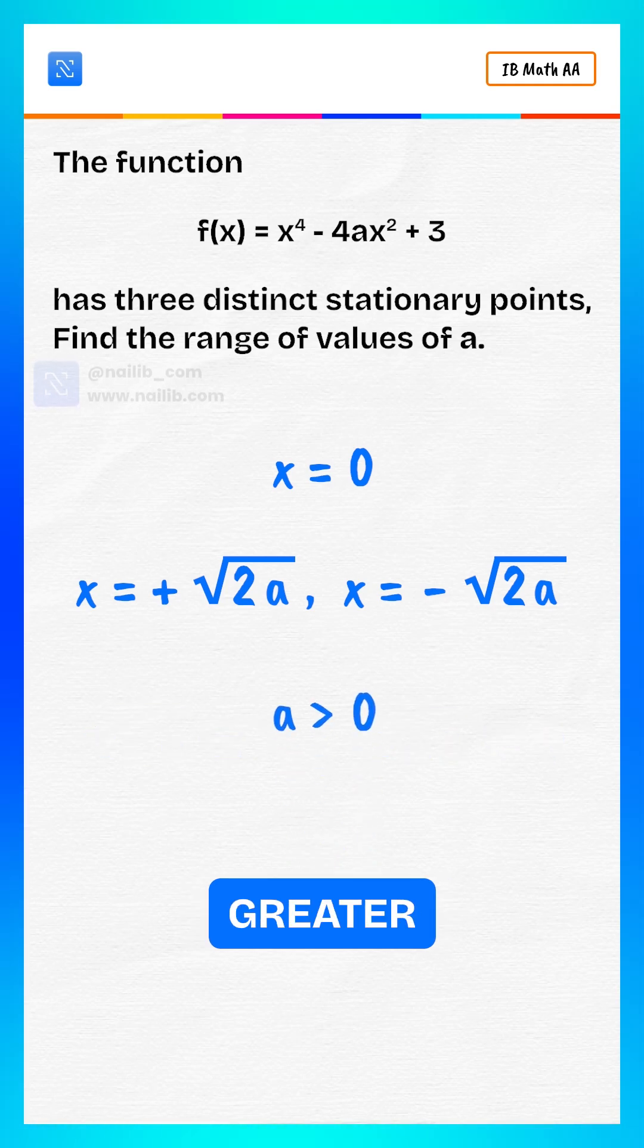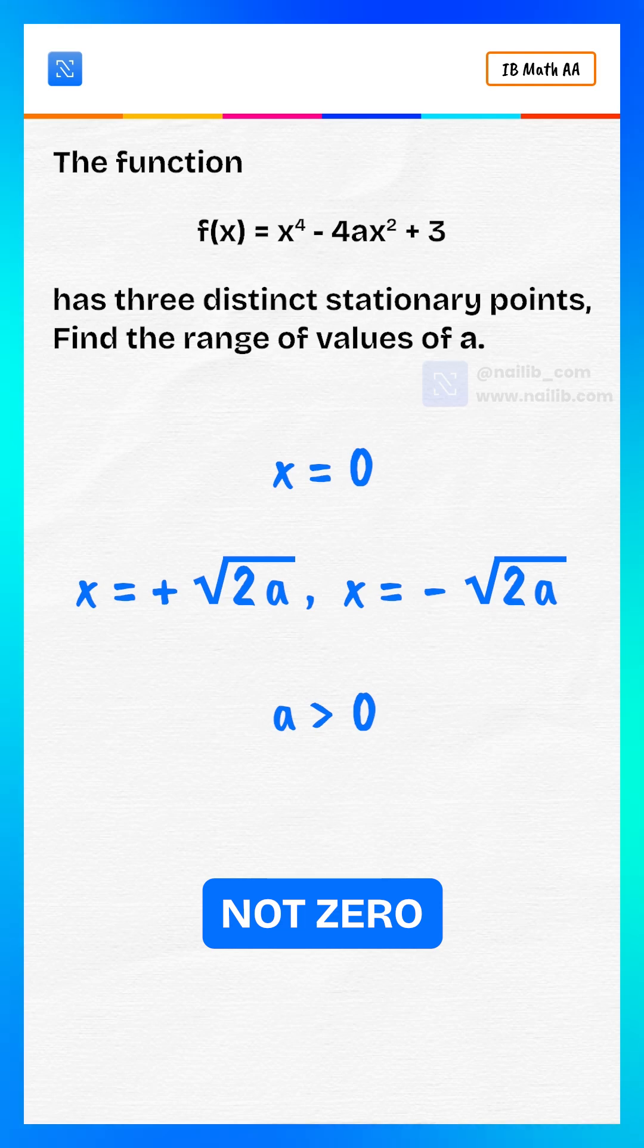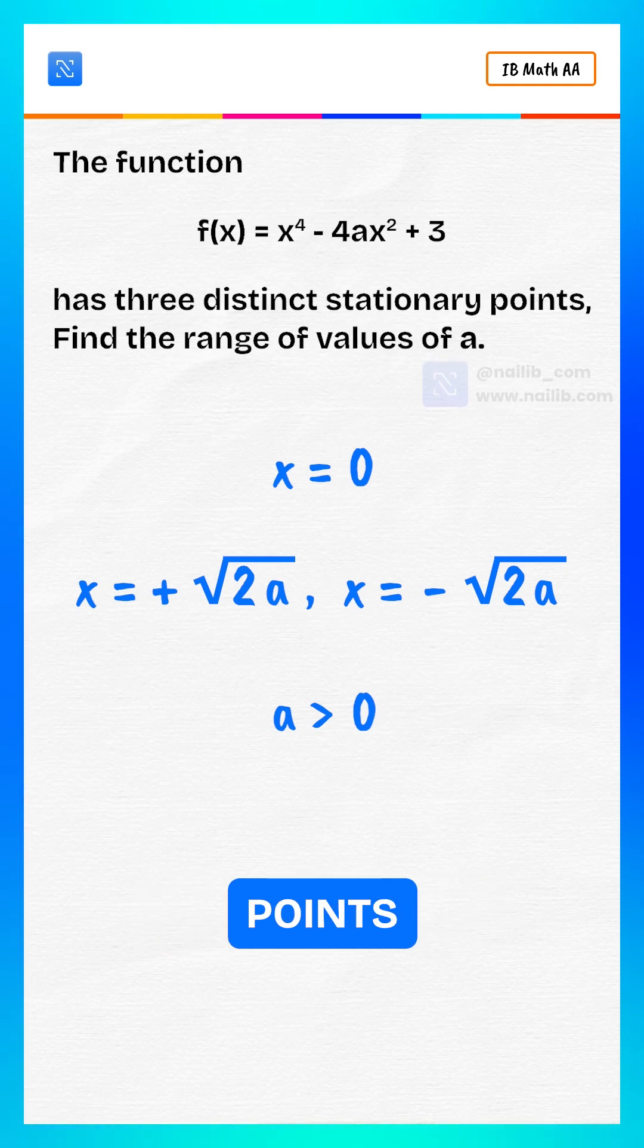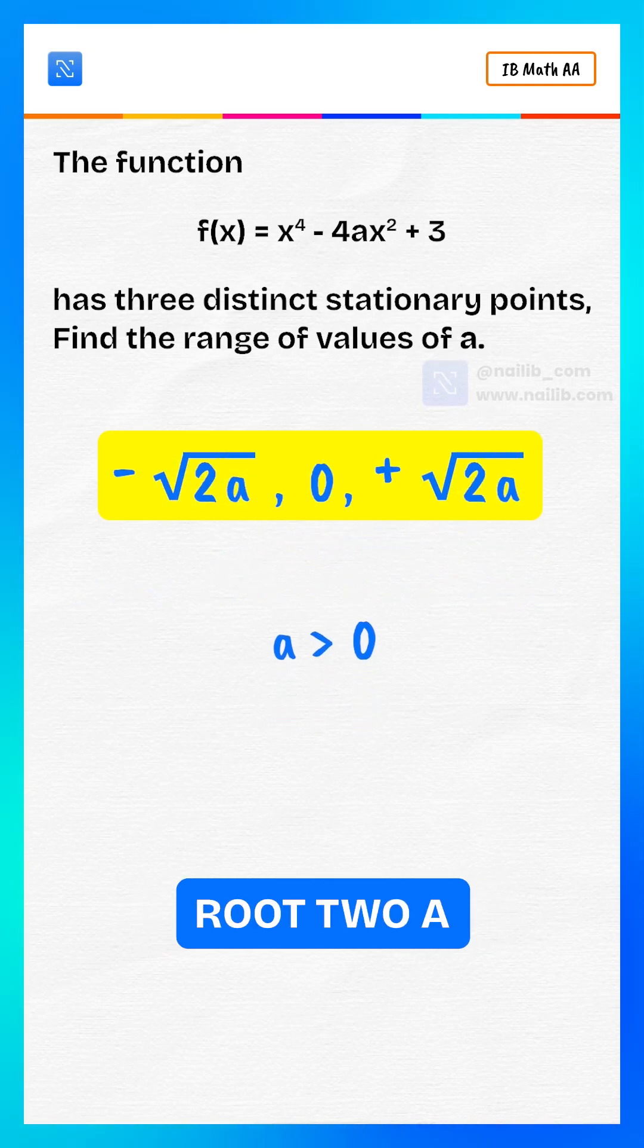And if a is greater than zero, then root 2a is not zero automatically. So all three points are distinct: minus root 2a, zero, and plus root 2a.